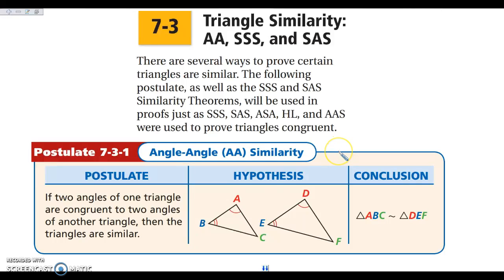Hey everybody! Today we are looking at section 7-3, which is triangle similarity. Just like when we did triangle congruence, the first thing we said was that if we know all the pairs of sides are congruent and all the pairs of angles are congruent, we knew that our triangles were congruent. Then we learned there were several shortcuts for proving triangles were congruent. We're going to look at the same thing here.